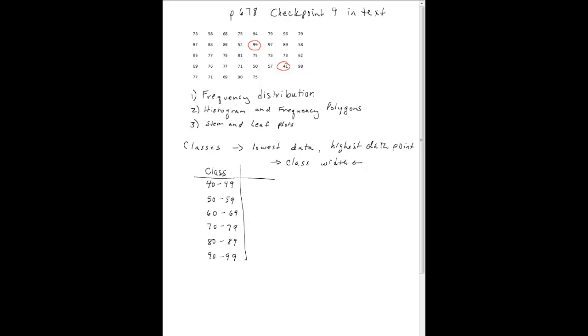My class width, I would just take 90 minus 80, and it's a width of 10. There are 10 grades that fall into each class. Now I need to come up with a frequency, how many times each data point appears in each category. Before I do the frequency, what I usually do is do a tally column.